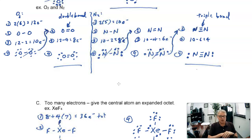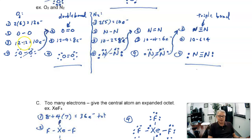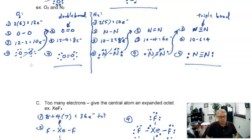Why do you find oxygen as an O2 molecule? Let's draw the dot structure. Two oxygens, each with 6 valence electrons, gives 12 total — no charge, so no adding or subtracting. The skeleton structure uses 2 electrons, leaving 10. Distributing those 10 electrons gives 7 electrons around each oxygen. Is that stable? No — we need 8 around each.